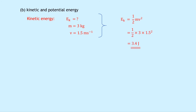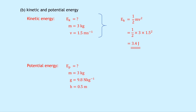For potential energy, we know the mass is 3 kilograms, g is 9.8 newtons per kilogram, and the height h is 0.5 meters. Using EP equals mgh and substituting in the numbers gives us 3 times 9.8 times 0.5, which gives an answer of 14.7 joules.